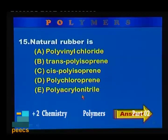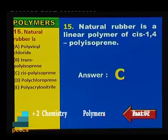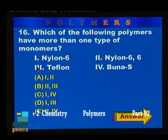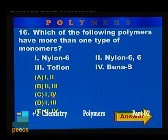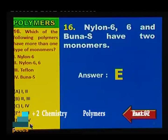Sample question 15: Natural rubber is: polyvinyl chloride; trans-polyisoprene; cis-polyisoprene; polychloroprene; polyacrylonitrile. Natural rubber is a linear polymer of cis-1,4-polyisoprene, therefore the correct answer is cis-polyisoprene — option C. Sample question 16: Which of the following polymers have more than one type of monomer? 1-nylon 6, 2-nylon 6,6, 3-teflon, 4-Buna-S. Options: 1 and 2; 2 and 3; 1 and 4; 1 and 3; 2 and 4. Both nylon 6,6 and Buna-S have two monomers each, therefore the correct option is E — 2 and 4.